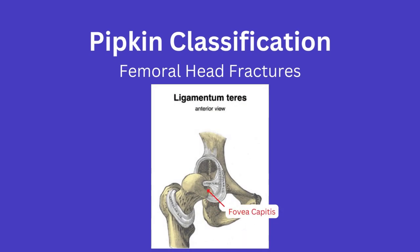The fovea, as you can see here, is a small depression on the surface of the femoral head. It serves as the attachment point for the ligamentum teres femoris.